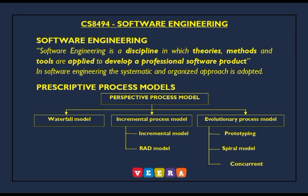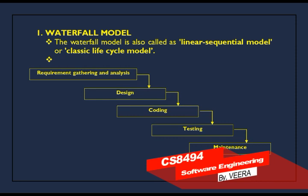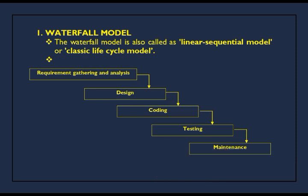In the prescriptive process model, we have three types: first, the Waterfall Model; second, the Incremental Process Model; and third, the Evolutionary Process Model. In this video, we are going to discuss only the Waterfall Model, which is also called the Linear Sequential Model or Classic Life Cycle Model.